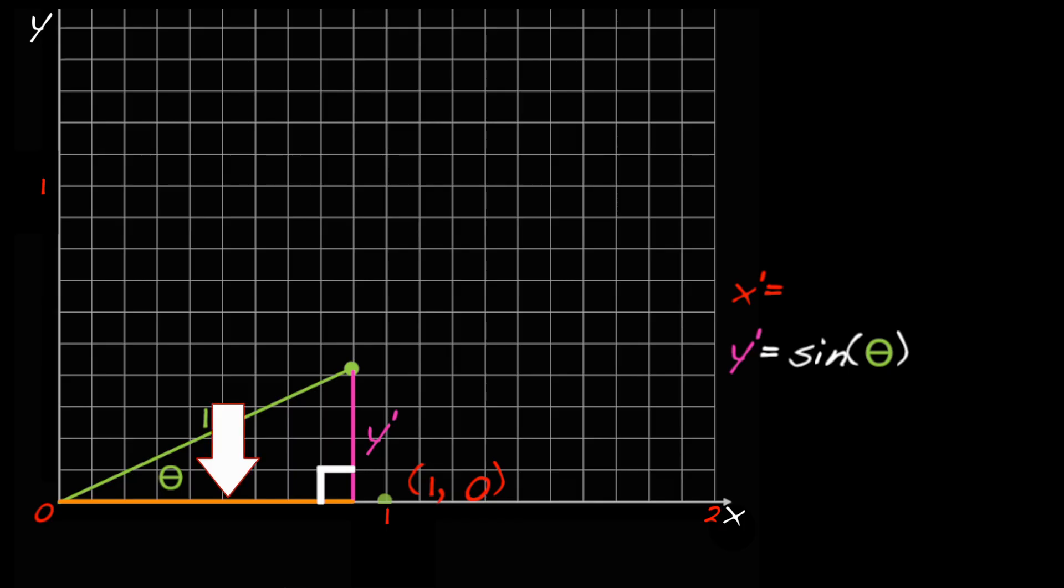Similarly, the orange line is adjacent to theta and has length x'. So if I form the ratio of adjacent over hypotenuse, I get x'/1 equals cosine theta, meaning that x' equals cosine theta.